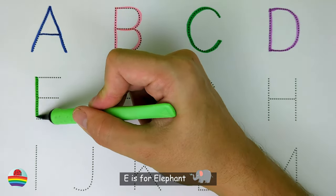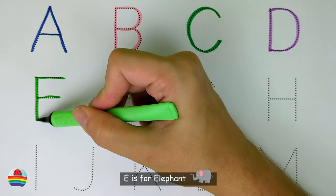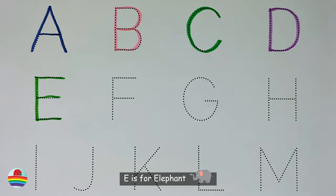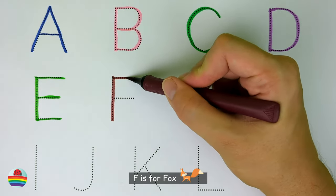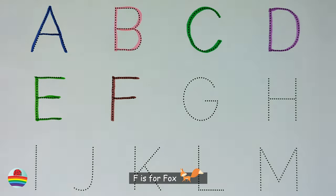E. E is for elephant. E. F. F is for fox. F.